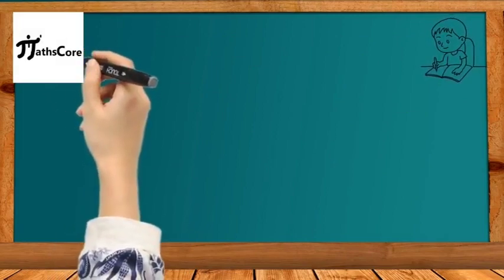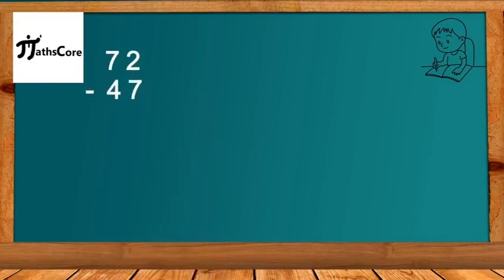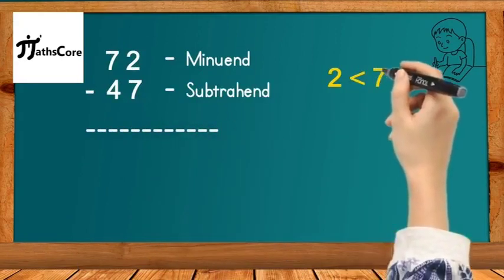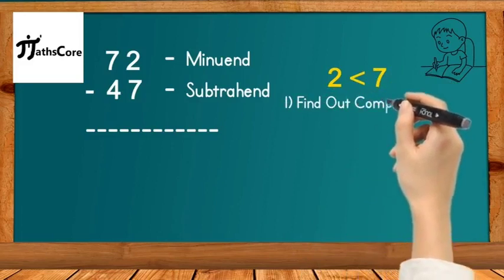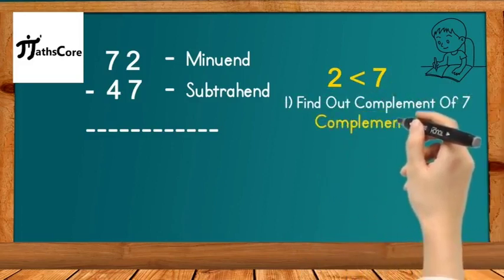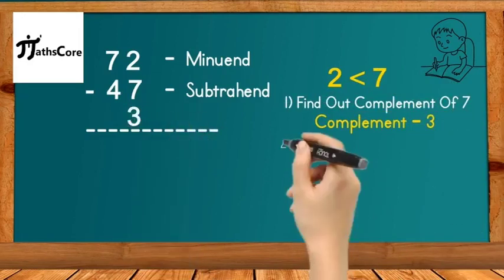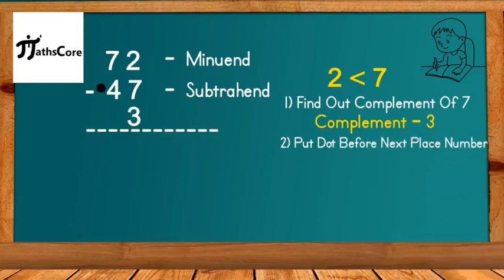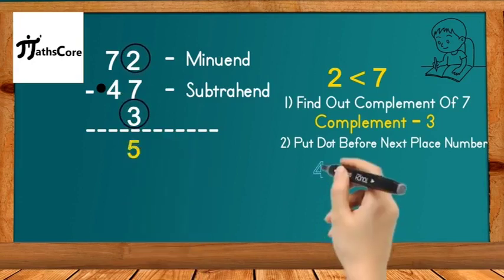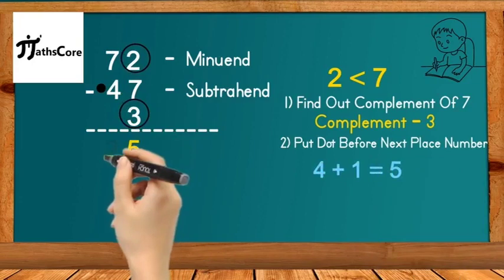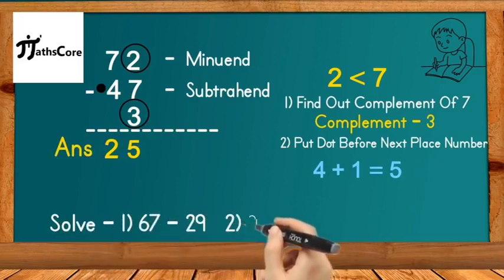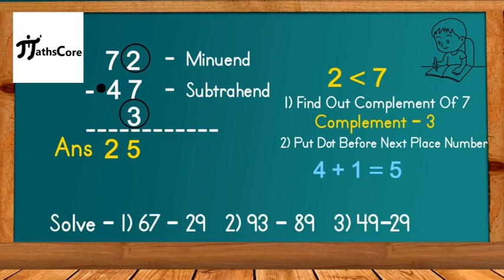Second example: 72 minus 47. Here 72 is the minuend and 47 is the subtrahend. The unit digit 2 is less than 7, so apply the Vedic method. Find the complement of 7, which is 3, and write it below 7. Put a dot before the tens digit of the subtrahend, which is 4. Add complement 3 to unit digit of minuend: 2 plus 3 is 5. Dot 4 means 4 plus 1 equals 5. Subtract 5 from 7: 7 minus 5 is 2. The final answer is 25.